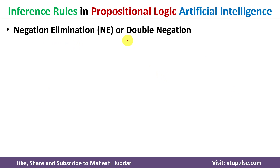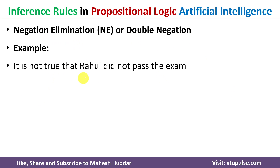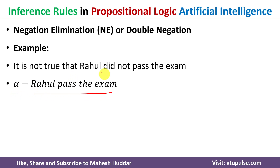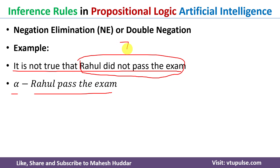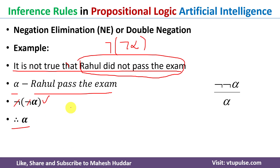The next rule is Negation Elimination, also known as double negation. Given the statement 'It is not true that Rahul did not pass the exam,' the primitive is alpha: 'Rahul passed the exam.' In propositional logic this becomes negation of negation of alpha. Applying De Morgan's law, the two negations cancel, giving us alpha as the conclusion.